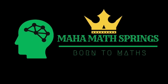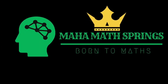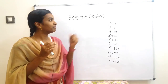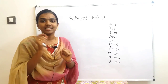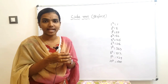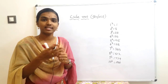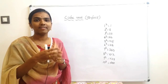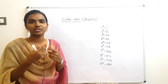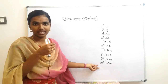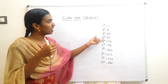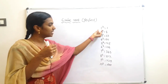Hello friends, welcome back to our channel Maha Math Springs. Today we are going to discuss how to find the perfect cube root of seven, eight, and nine digit numbers. In my last video I explained four, five, and six digit numbers — the link is in the description. Before starting, we should know the cubes of numbers from one to ten, which I have already explained.